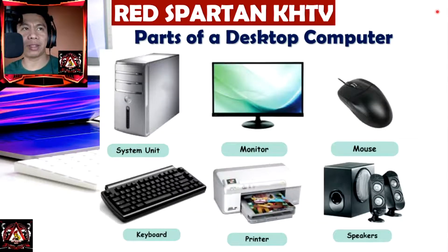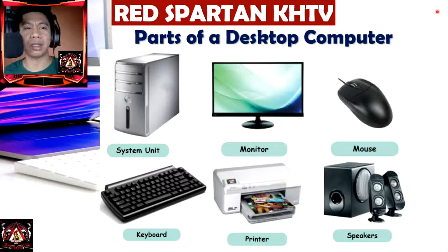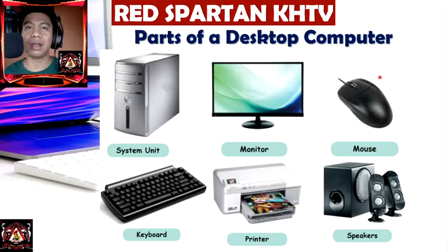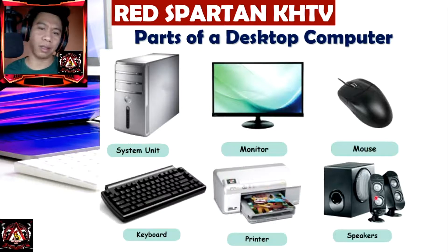Next is the parts of a desktop computer. We have here different parts of the desktop computer and we're going to discuss these basic or main parts. We have the system unit, the monitor, the mouse, the keyboard, the printer, and the speakers.